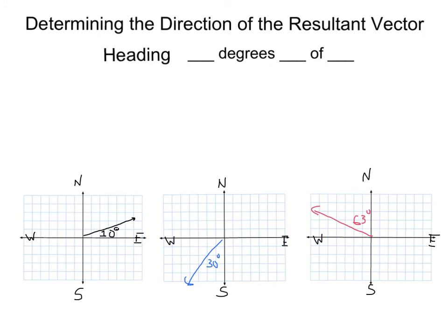Determining the direction of the resultant vector. This is also known as the heading and we would say that it's so many degrees, blank of blank and inserting some directions here. The best way to do this is to do it by example. If we look here, here we have a resultant vector that's at a 10 degree angle with the east axis. We could say that that would be 10 degrees north of east. Meaning that we would start in the east direction and have to go 10 degrees towards the north to get onto that vector.